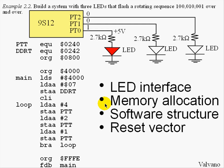The software structure includes a ritual which is executed once to initialize the system — in this case to set the stack pointer, to set the direction register so the three pins are outputs, and to enable interrupts so the debugger will run. The second part of an embedded system is an infinite loop which executes the body of the program over and over again — in this case setting the output to 4, then to 2, then to 1, and repeating the pattern.